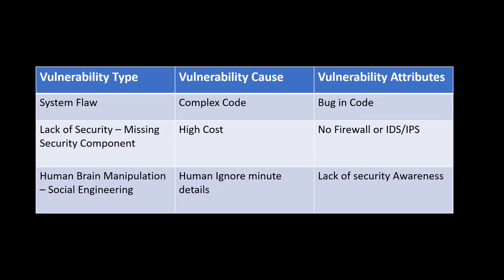The third type is human brain manipulation. You already know we have a large number of social engineering attacks where the intention is to manipulate your brain so that you click some link or download or upload something. Generally this happens because you ignore certain things — due to a lack of awareness, you do not know what phishing, spyware, or malware are, and because of that lacking, you ignore the fact that there is a vulnerability.